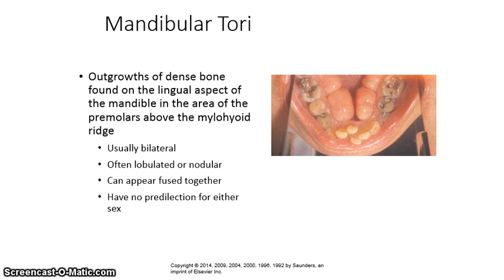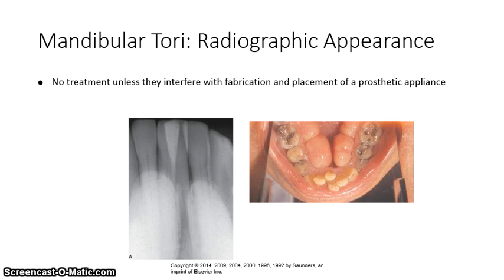They are often lobulated or nodular and can appear fused together. They have no predilection for either sex. The photograph on the right shows extremely large mandibular tori, which are practically growing together from one side to the other and are blocking the tongue. This is unusually large; most tori are much smaller than this.